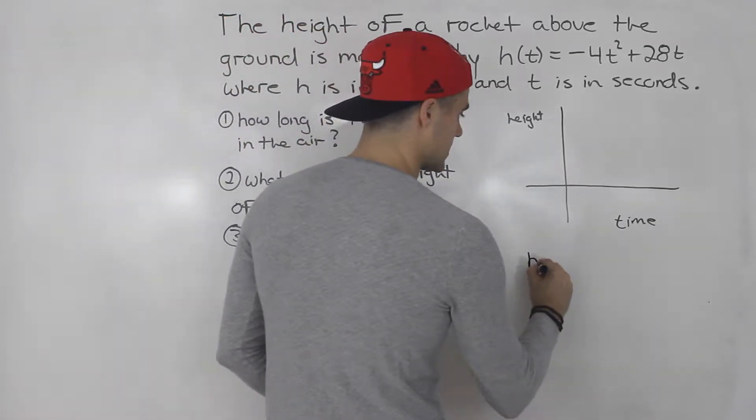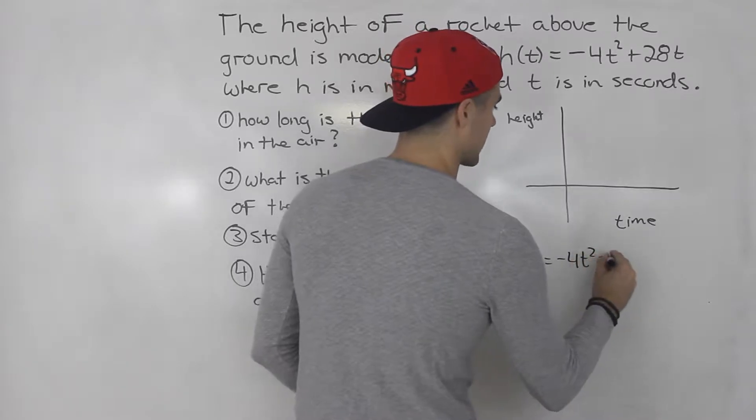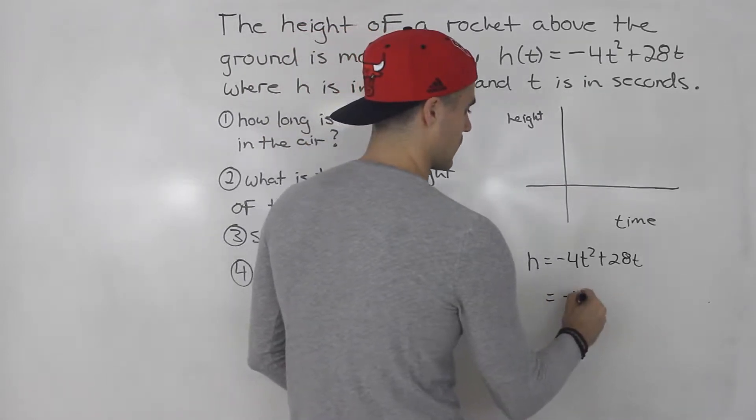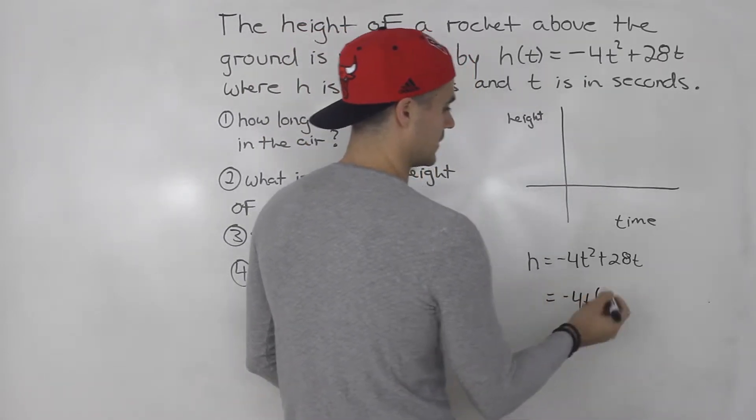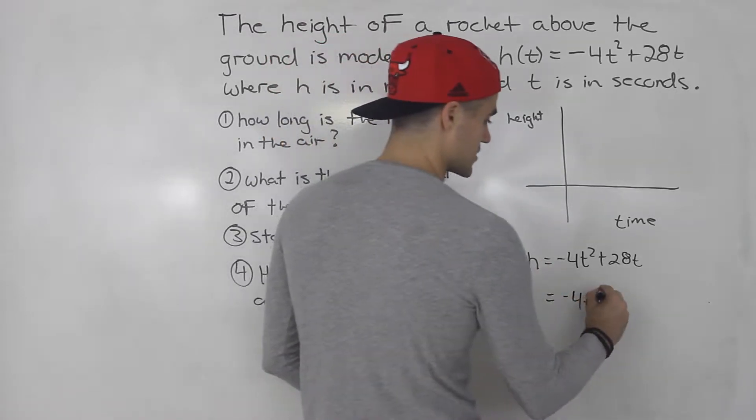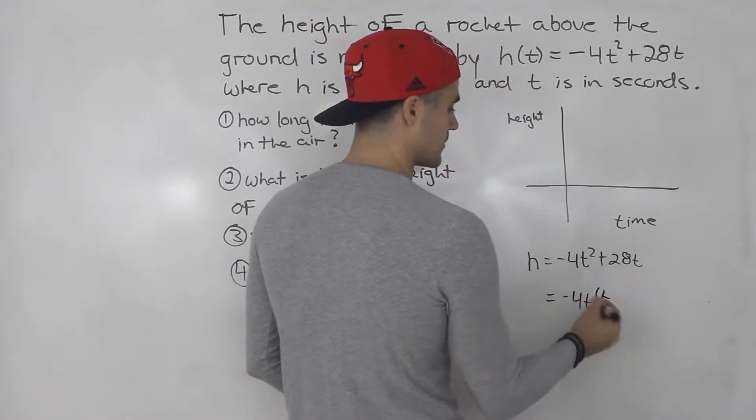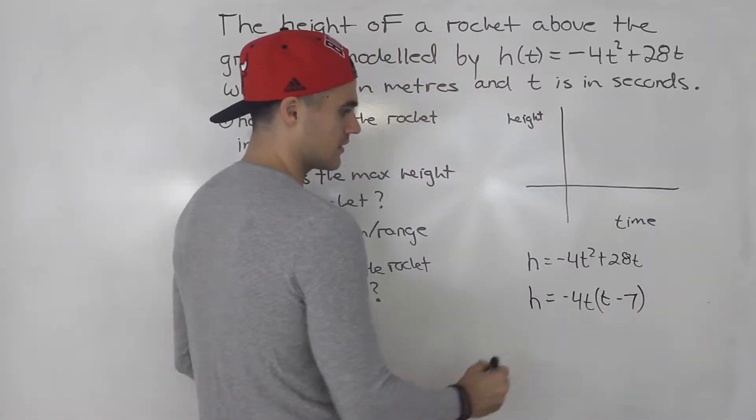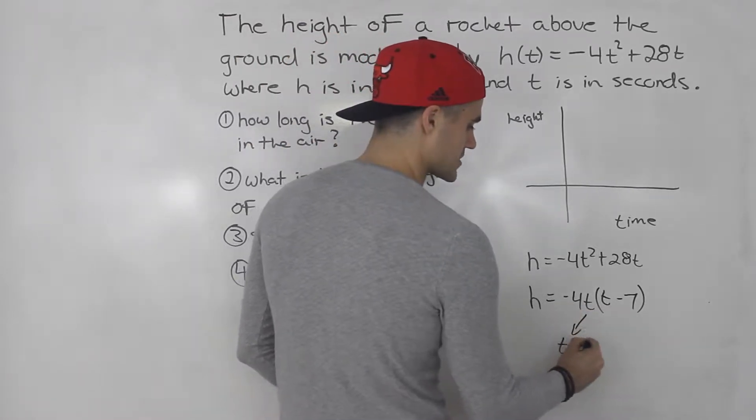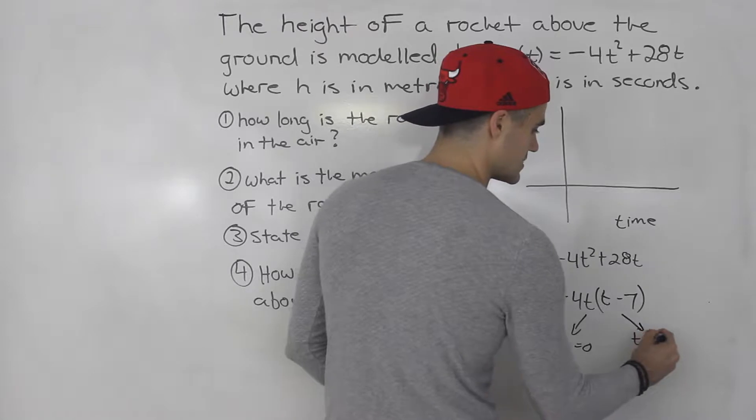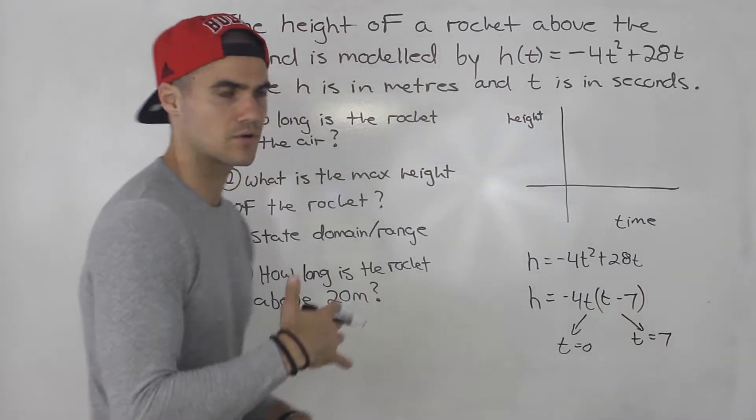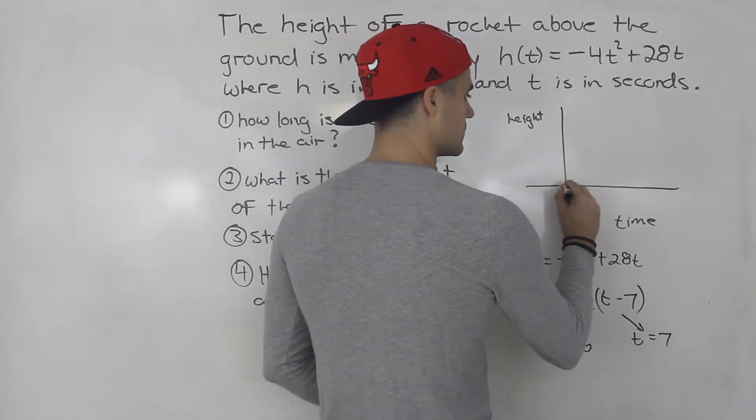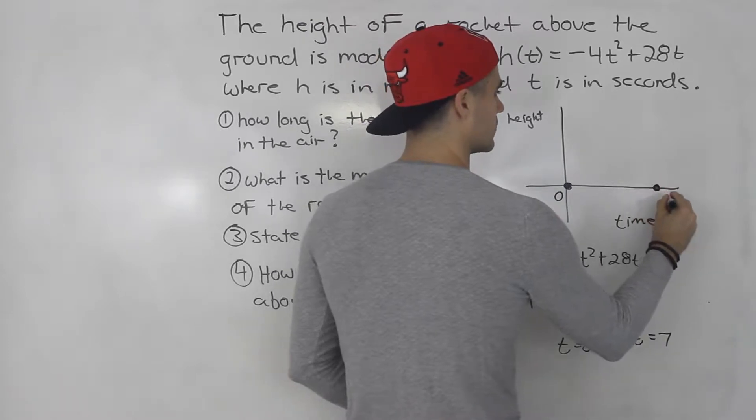We got -4t² + 28t. This here is actually easy to factor. We could take out a -4t and we'd be left with -4t(t - 7). So from here you can tell the intercepts are t = 0 and t = 7 because t - 7 = 0. When you isolate for t, you end up getting 7.